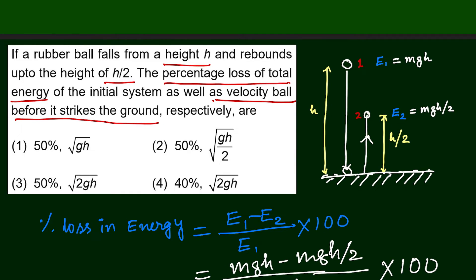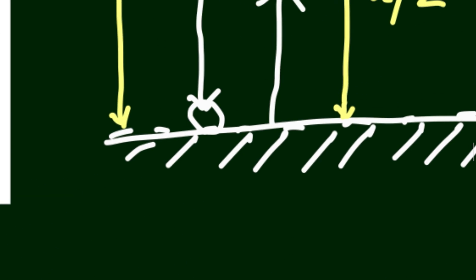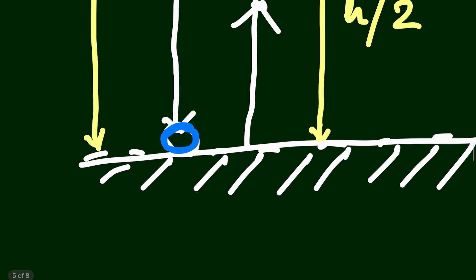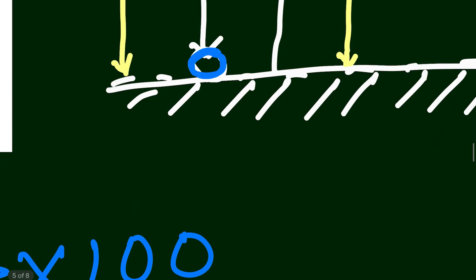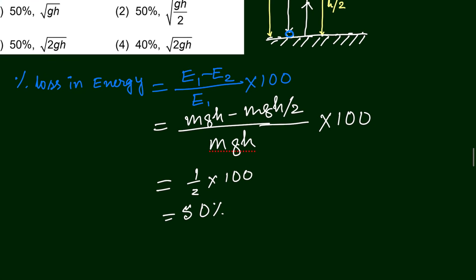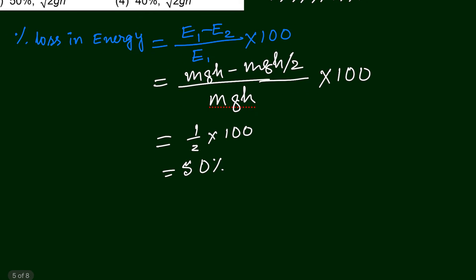In the second part, we have to find out the velocity of the ball before it strikes the ground. That means we look at the position just above the ground. We will use an equation of motion. The equations of motion are: V = U + AT, S = UT + ½AT², and most relevantly here, V² = U² + 2AS.